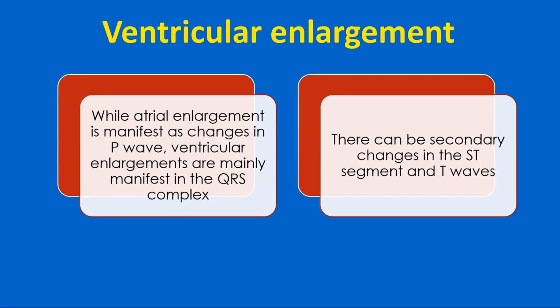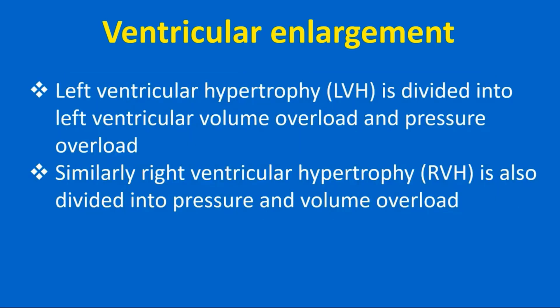While atrial enlargement is manifest as changes in P wave, ventricular enlargements are mainly manifest in the QRS complex. There can be secondary changes in the ST segment and T waves. Left ventricular hypertrophy is divided into left ventricular volume overload and pressure overload. Similarly, right ventricular hypertrophy is also divided into pressure and volume overload.